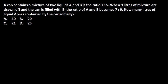Welcome back. In this video tutorial, let's solve another problem regarding alligation and mixtures. A can contains a mixture of two liquids A and B in the ratio 7:5. When 9 liters of mixture are drawn off and the can is filled with B, the ratio of A and B becomes 7:9. We need to find how many liters of liquid A was initially contained in the can.